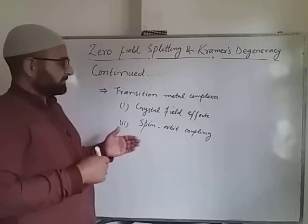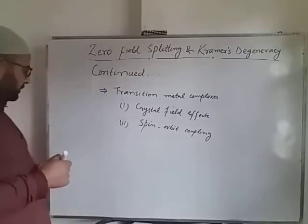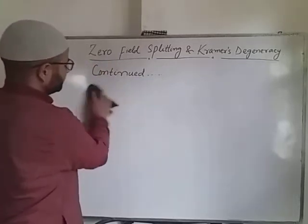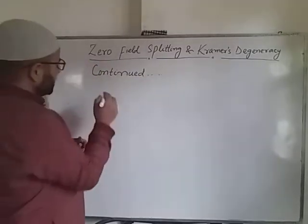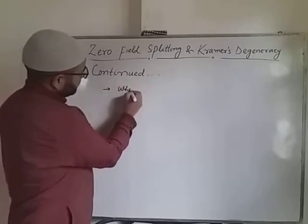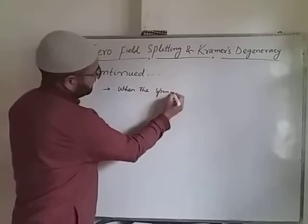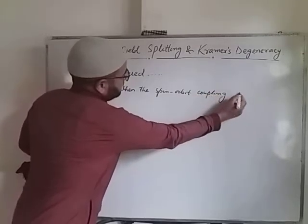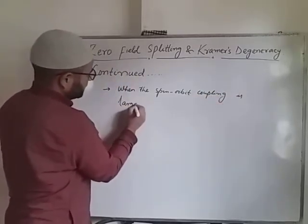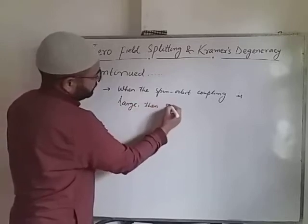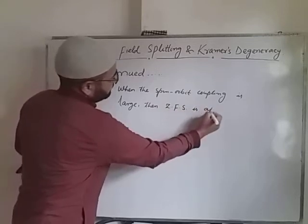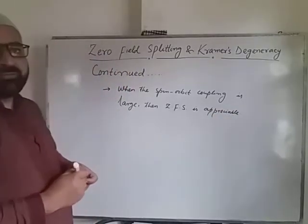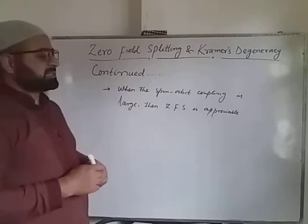These two effects are very crucial in terms of the EPR spectra of transition metal complexes, as they actually complicate the EPR spectrum. We will see what happens when the spin-orbit coupling is very large. It has been found that when the spin-orbit coupling is large, then zero field splitting is appreciable. So we can say that zero field splitting is directly influenced by the spin-orbit coupling which occurs in transition metal complexes.